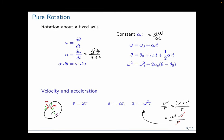For rotation about a fixed axis, all equations are cumulative — we add more situations but previous equations always apply. Omega, the angular velocity, is defined as the derivative of theta with respect to time. Alpha, the angular acceleration, is the derivative of angular velocity with respect to time, or the second derivative of angle with respect to time. A third equation relates angular acceleration, theta, and angular velocity with no time variable. From these three equations, we really only have two independent equations.